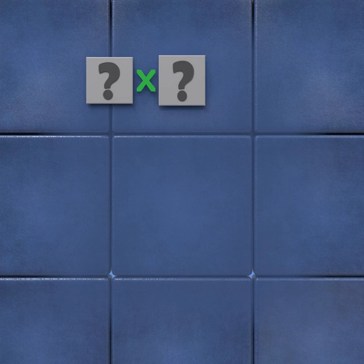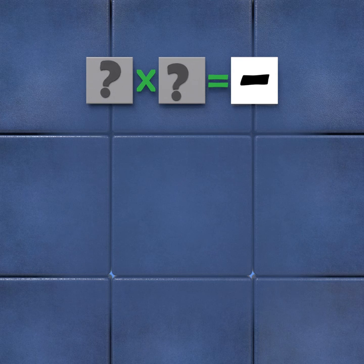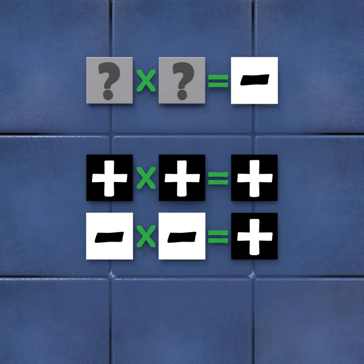What we need to find is a value that when multiplied by itself, will give us a negative result. The problem is that from what we've seen so far, no value times itself will give a negative result. A positive times a positive, or a negative times a negative, will both give a positive result.